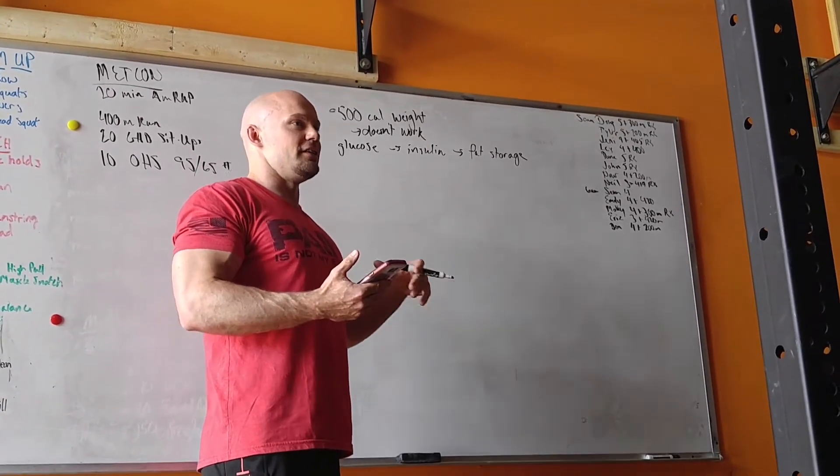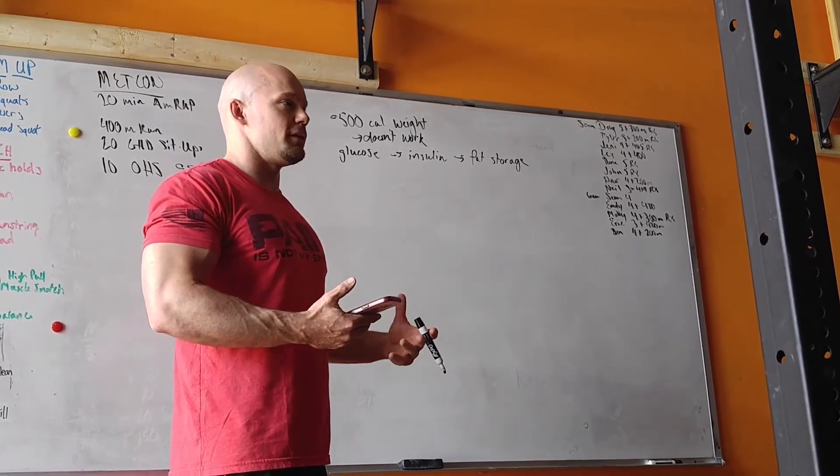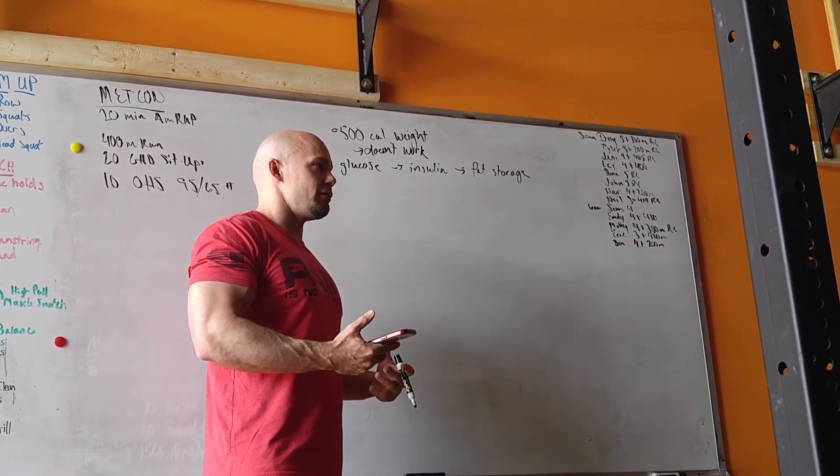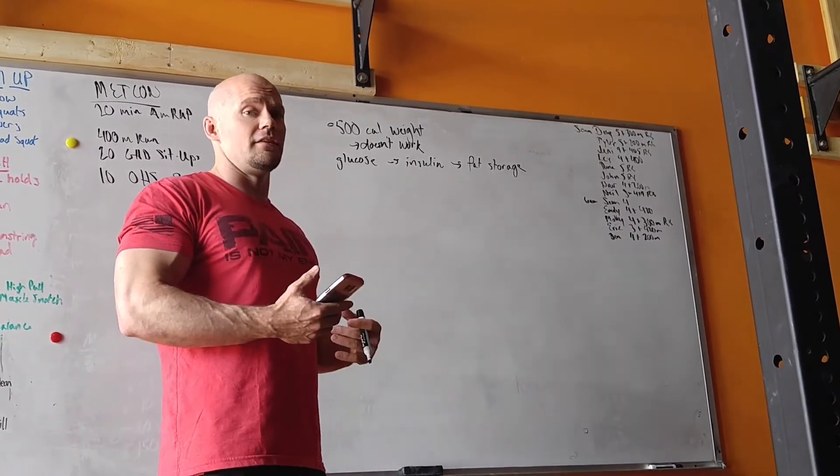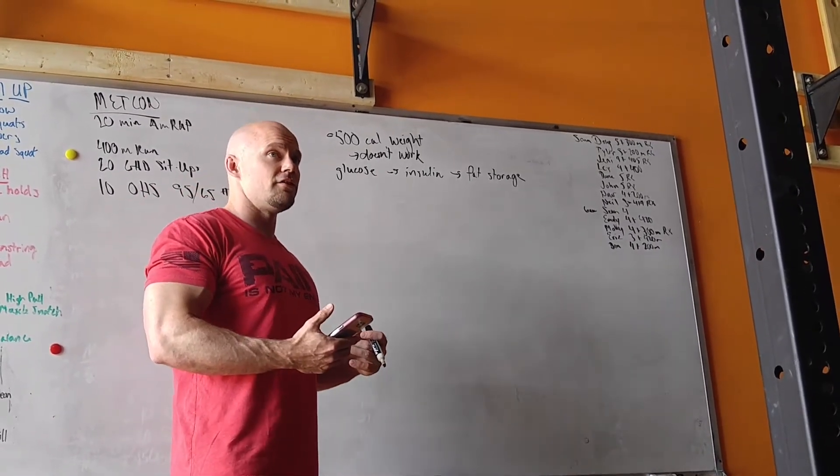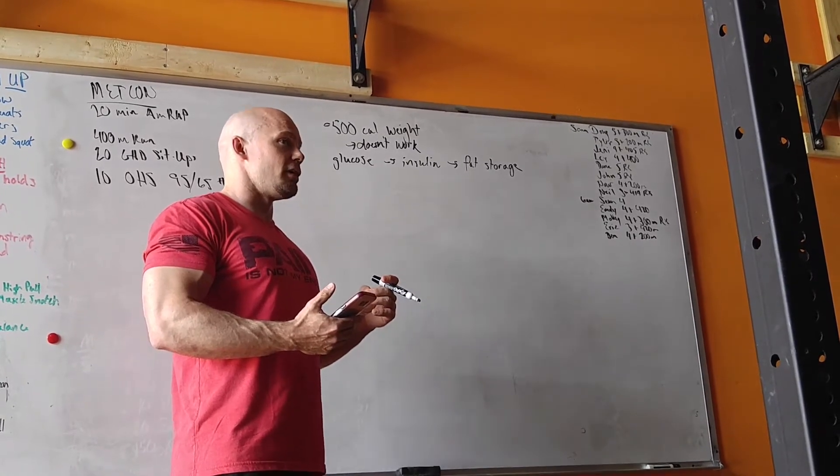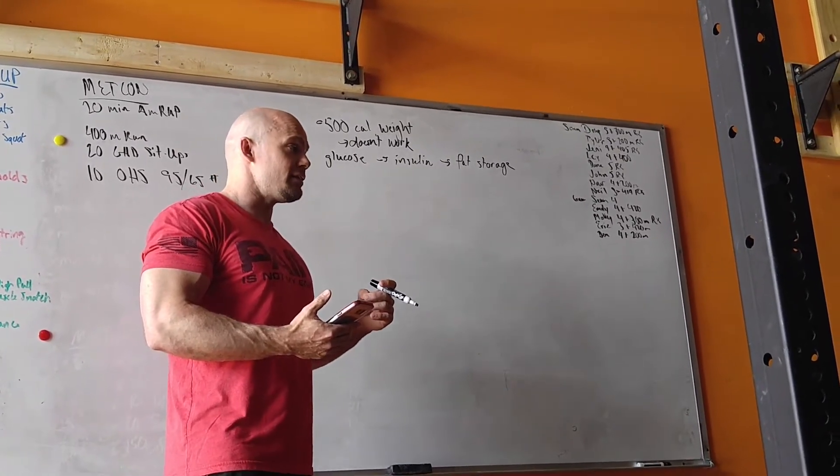Yeah, so you can't go off of these equations that they have because they're based on human beings that don't exist. Crazy averages that are severely outdated too. Like the average, like what is it, nine calories in a gram of fat? That's the average.